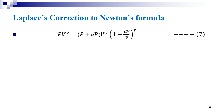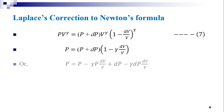This becomes PVᵞ = (P + dP)·Vᵞ·(1 − dV/V)ᵞ. Applying the binomial theorem and neglecting higher-order terms, we get P = (P + dP)·(1 − γ·dV/V), which expands to P = P − γP·dV/V + dP − γ·dP·dV/V.